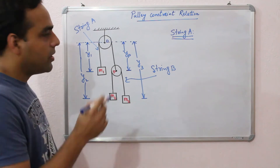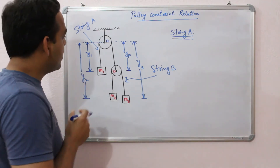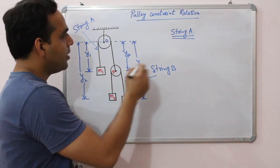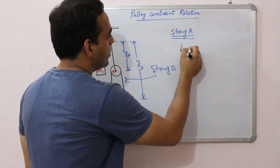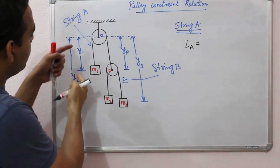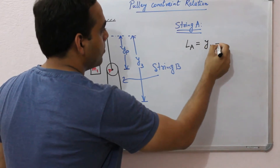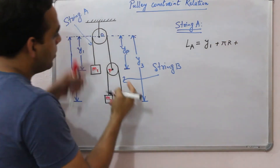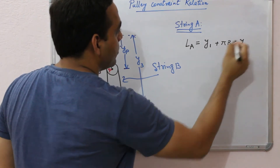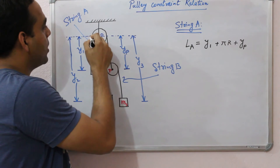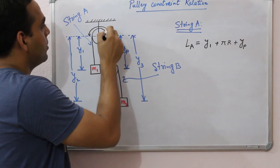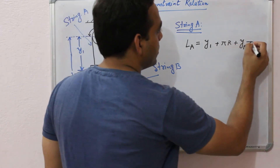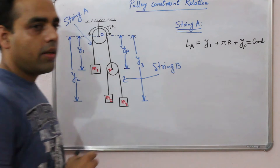For string A, let us find the constraint relation between M1 and the movable pulley P. Let L_A be the length of string A. We can write: L_A = Y1 + πR + YP, where πR is the length of the arc — the portion of the rope which is in contact with the fixed pulley. This length is constant since string A is inextensible.